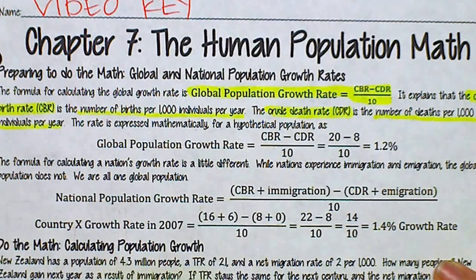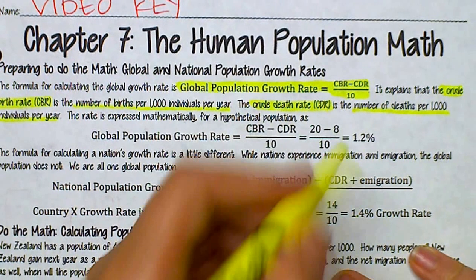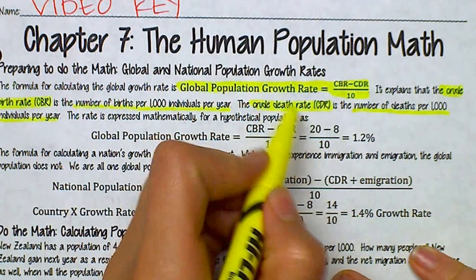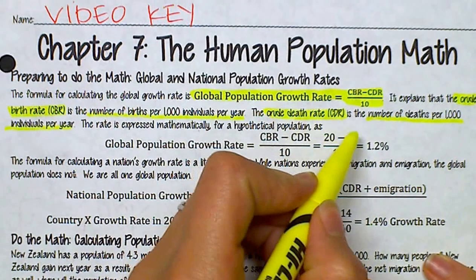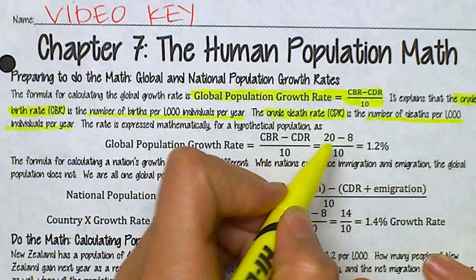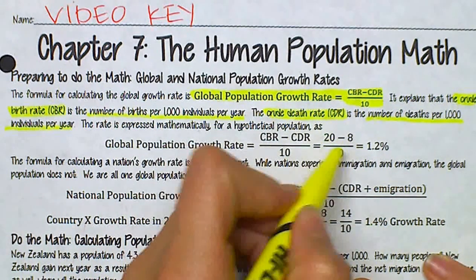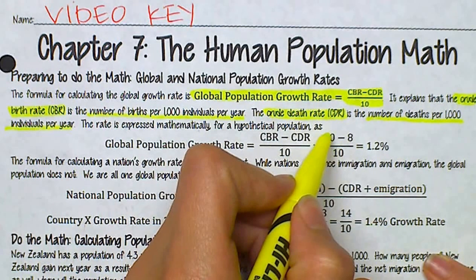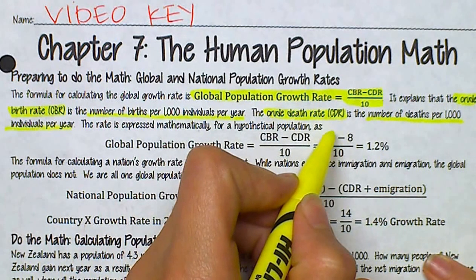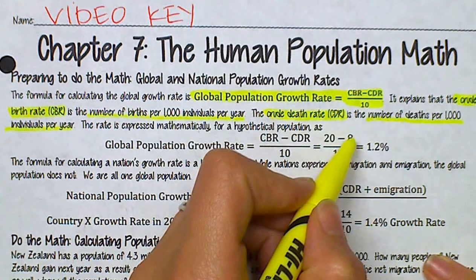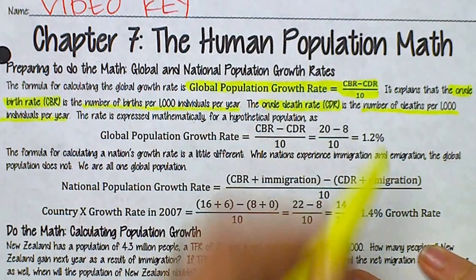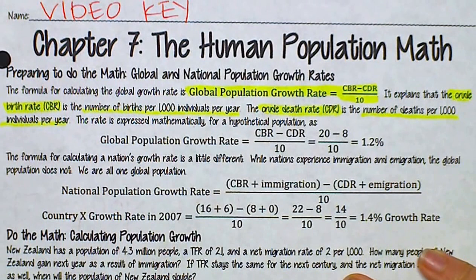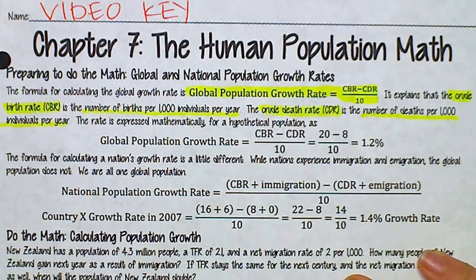So if a hypothetical country had a CBR of 20 and a CDR of 8 — that's 20 births per thousand and 8 deaths per thousand — then the growth rate would be 1.2 percent.